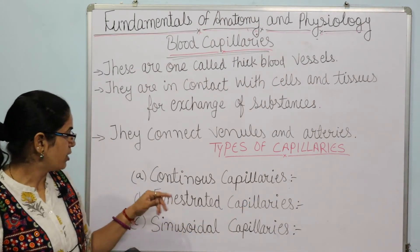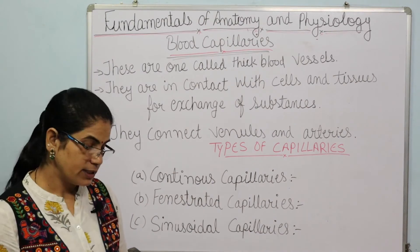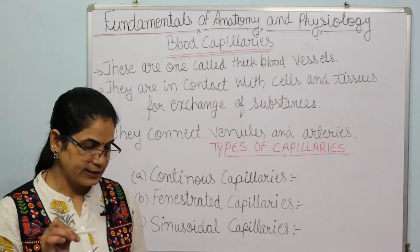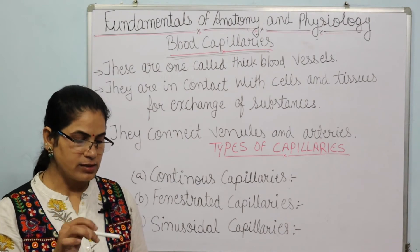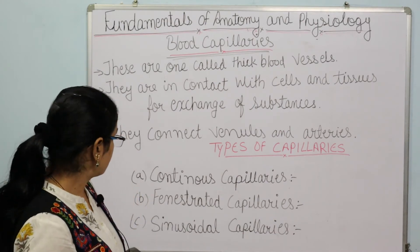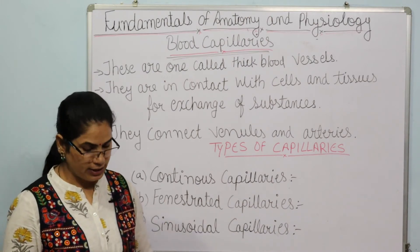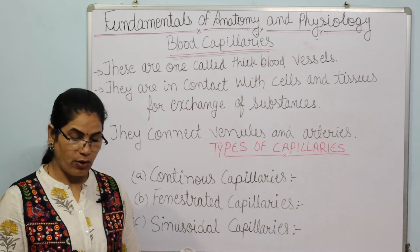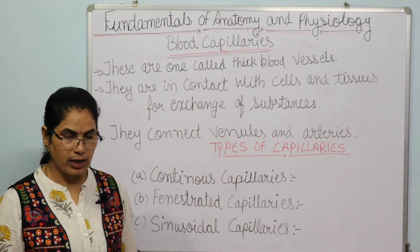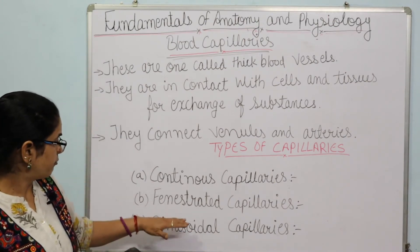The types of blood capillaries are: first, continuous capillaries. These are found in all types of muscles, connective tissues, and in the central nervous system, which includes our brain and spinal cord. The second type is fenestrated capillaries, which are found in renal organs such as the kidney, endocrine glands which produce hormones, and in the intestines.